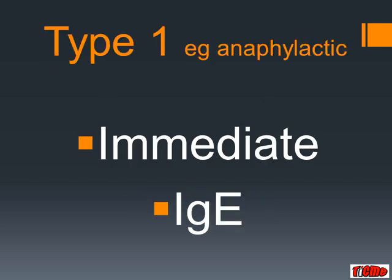This brings us to anaphylaxis. Anaphylaxis is a type 1 hypersensitivity reaction, also known as immediate hypersensitivity, and is IgE dependent. The primary cell in this reaction is the mast cell or basophil. The reaction is amplified, however, by other cells like platelets, neutrophils, and eosinophils.